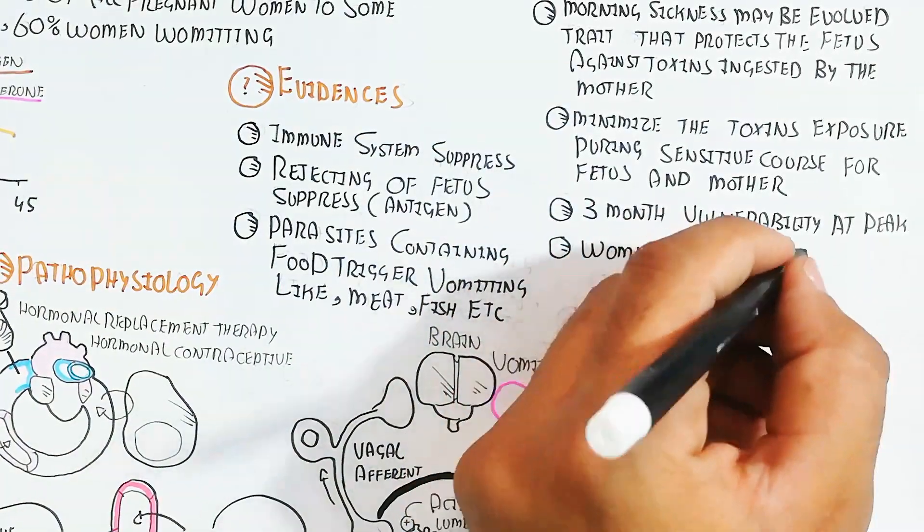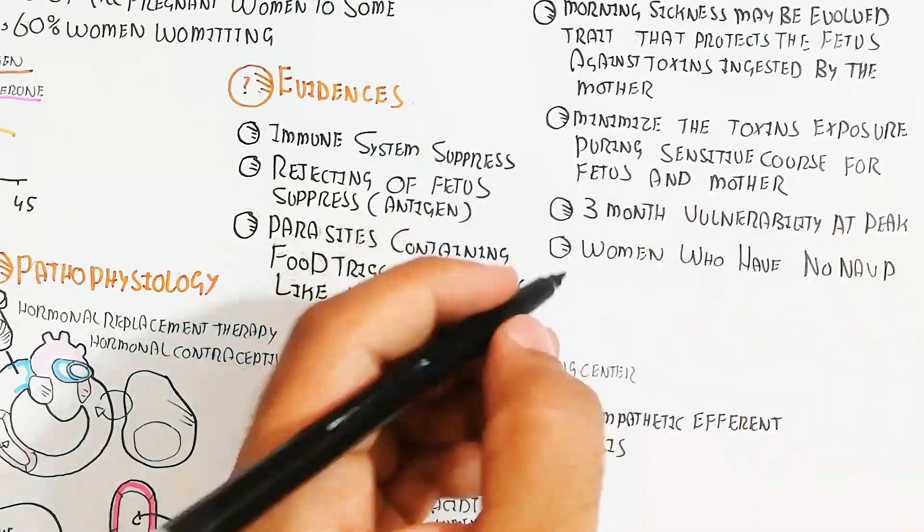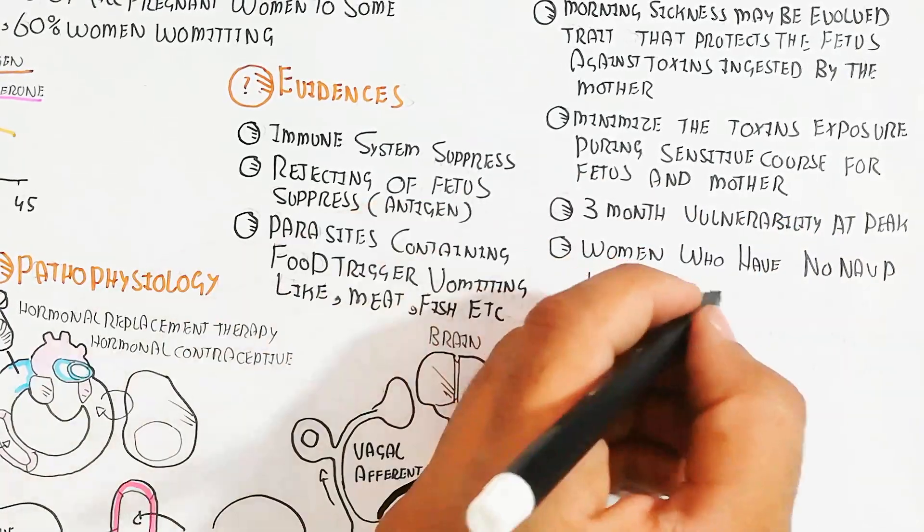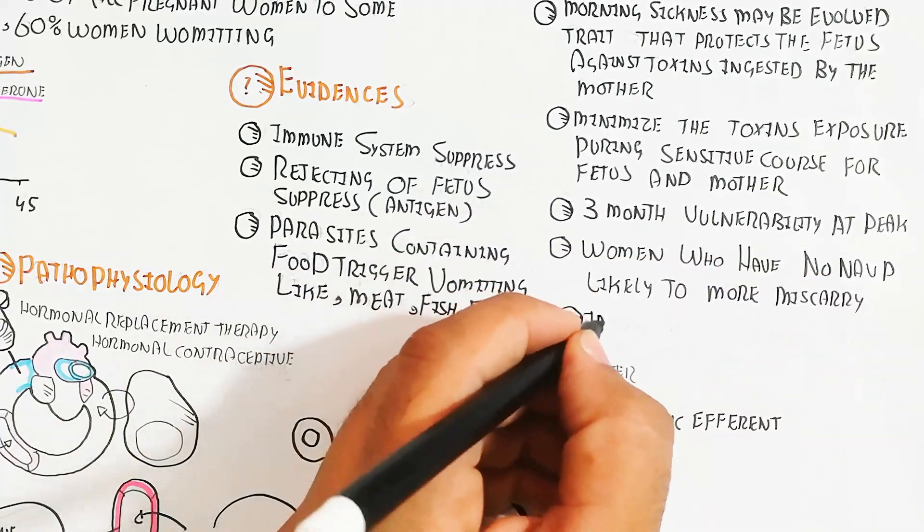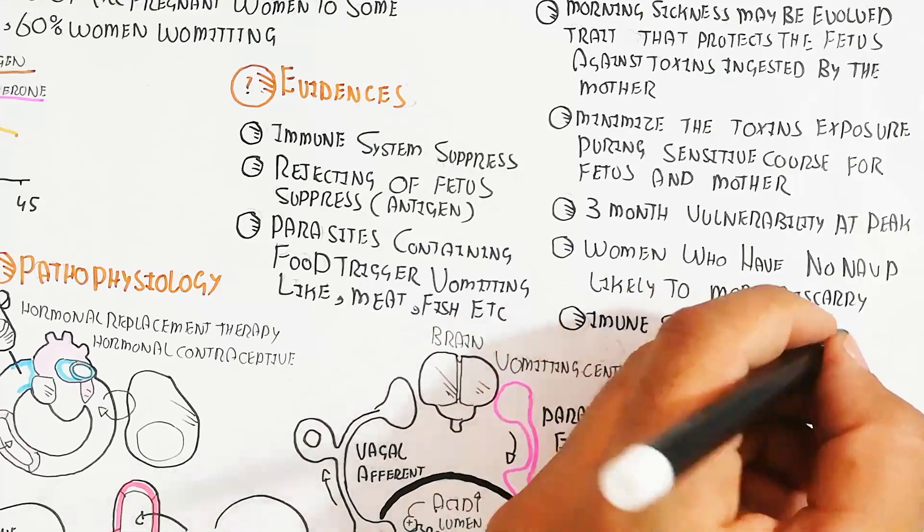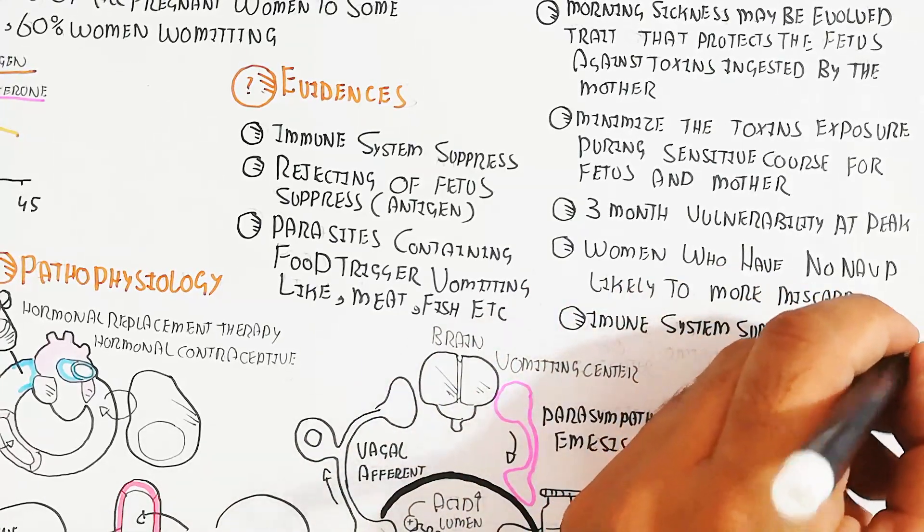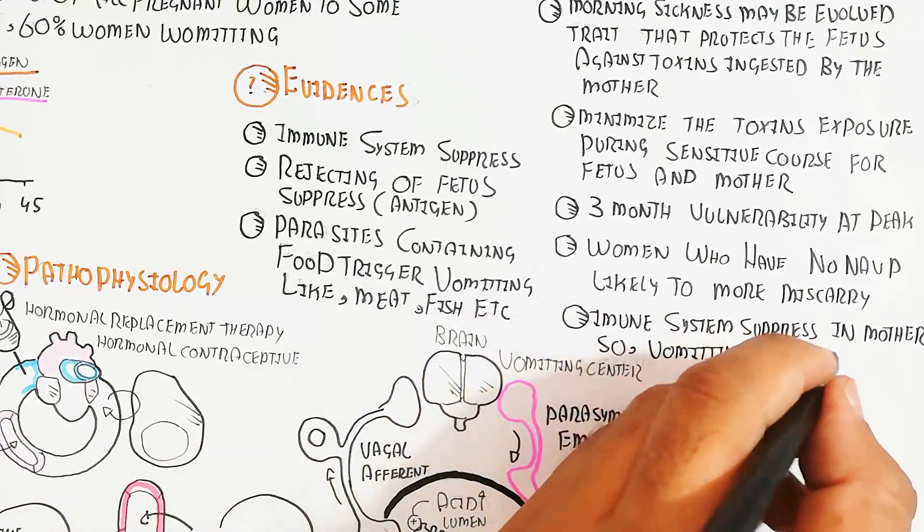The beneficial effect of morning sickness is prevention of early childbirth. The immune system is suppressed in the mother, so vomiting is an option for prevention of early childbirth and normal growth of the fetus. If morning sickness does not occur, early childbirth and teratogens and other problems can lead to abnormality.